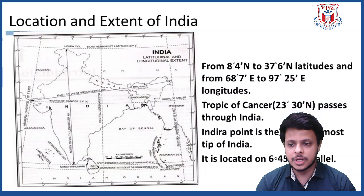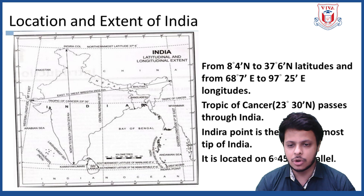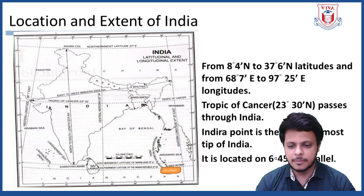Let's talk about the location and extent of India. India is located from 8 degrees 4 minutes north to 37 degrees 6 minutes north latitude, and from 68 degrees 7 minutes east to 97 degrees 25 minutes east longitude. The Tropic of Cancer, that is 23 degrees 30 minutes north latitude, passes through India. Indira Point is the southernmost tip of India, located at 6 degrees 45 minutes north parallel.